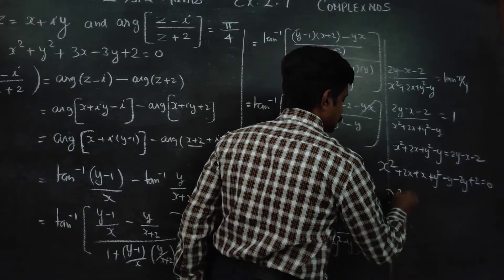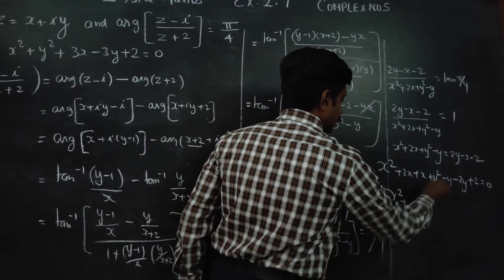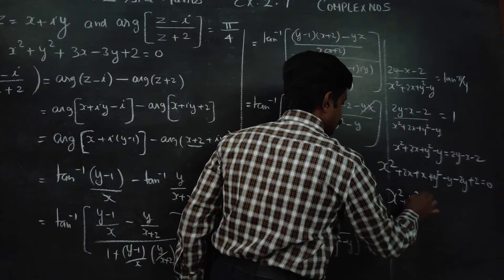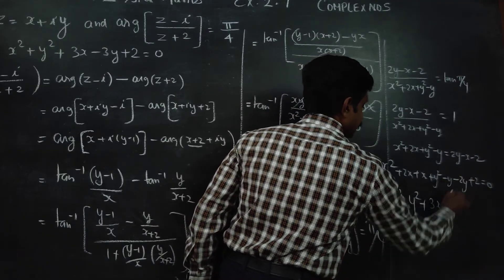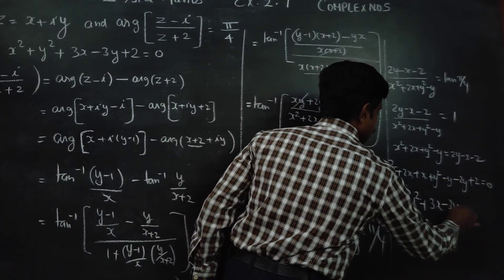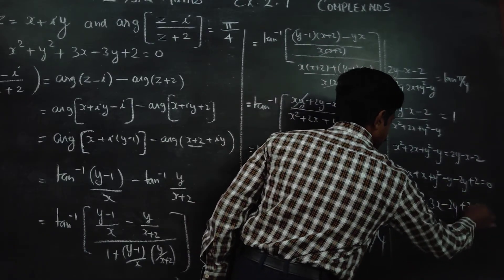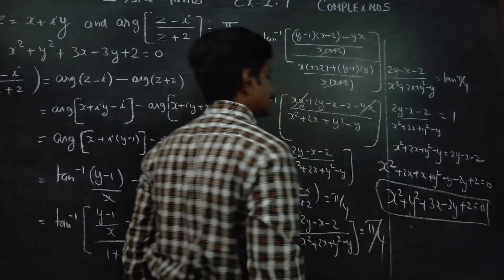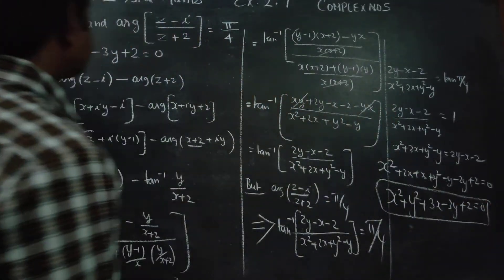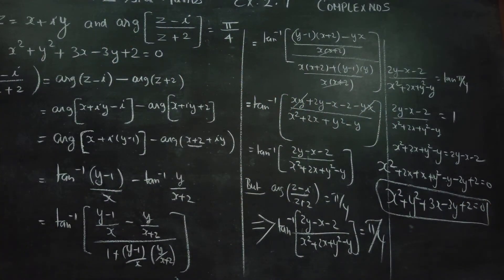Therefore, your answer is x squared plus y squared plus 3x minus 3y plus 2 is equal to 0. This is your final answer.